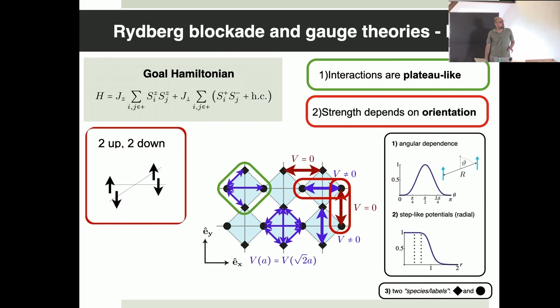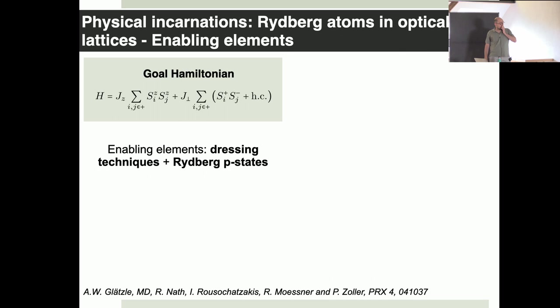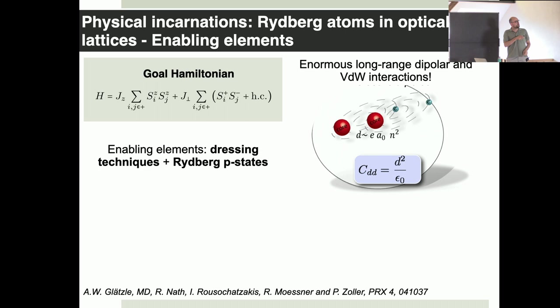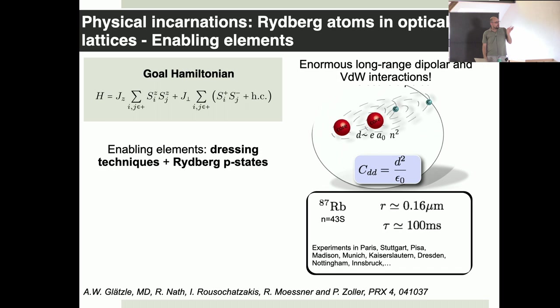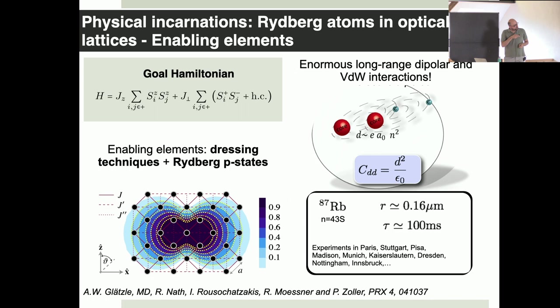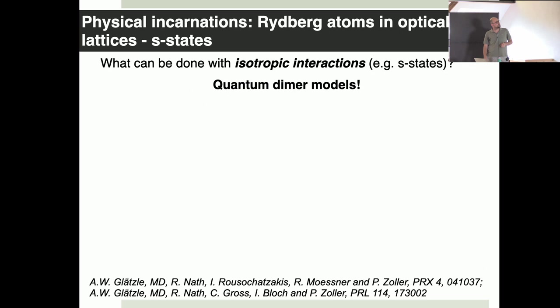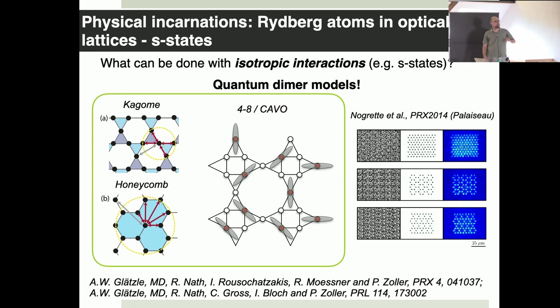What we tried to do is exactly this in the Rydberg experiments that Misha later built, but you immediately realize that if you try to build this Hamiltonian, it's a mess. The reason is not the XY term. These constraint terms that impose the Gauss law put equal interactions between all four spins close to a vertex, and this is very unnatural. These interactions are plateau-like, so this guy interacts with this one but has zero interaction with the next one. The interaction at least one lattice spacing and square root of two, and interaction depends on orientation.